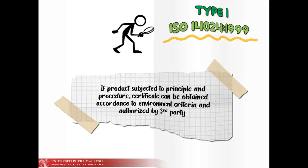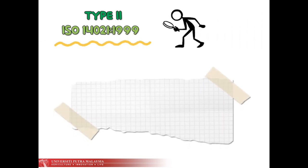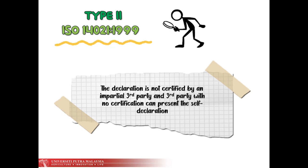The next one is Type 2 ISO 14021 1999, which states that there is no impartial third party involved in the certification process, and it is a self-declaration certification where the environmental aspects and important aspects of product life cycle must be put into consideration.